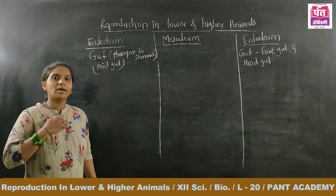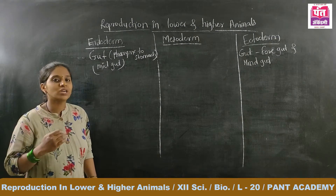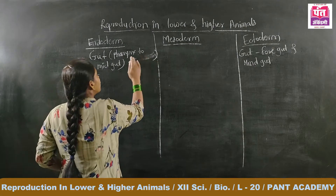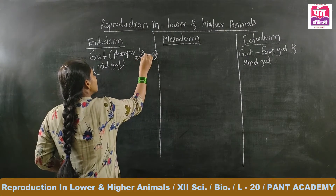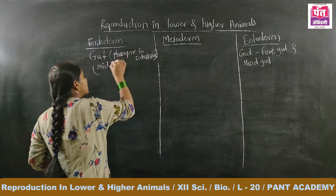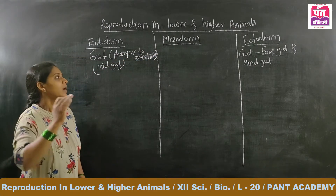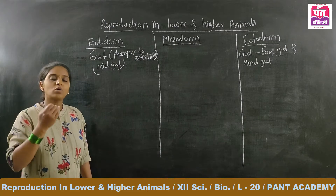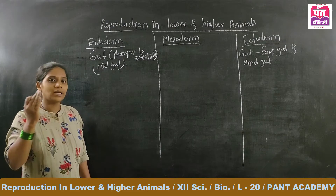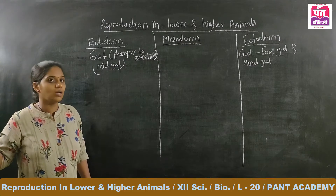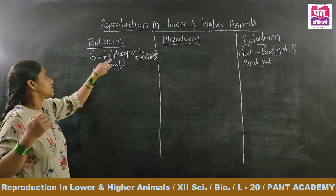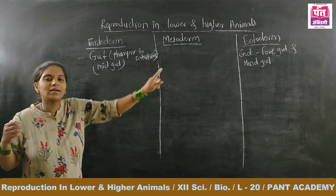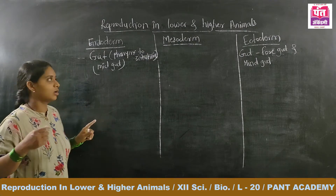To clarify: pharynx, esophagus, and stomach — that portion is the midgut and is made up of endoderm. The foregut, from mouth to pharynx, and the hindgut, from large intestine to anus, are made up of ectoderm. So the midgut portion of the digestive system is made up of endoderm, while foregut and hindgut are made up of ectoderm.